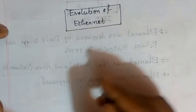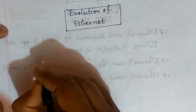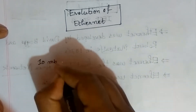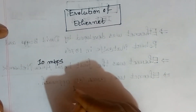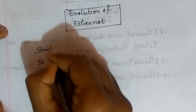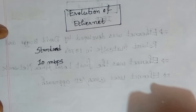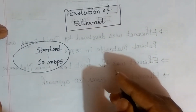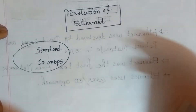As Ethernet was further developed, it reached 10 Mbps. At that point, the standard was given the name 'Standard Ethernet', operating at 10 Mbps.